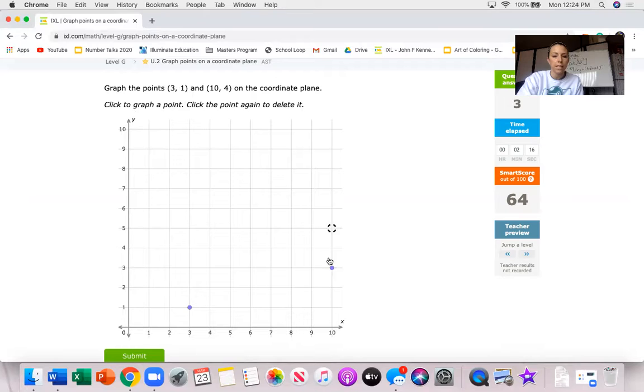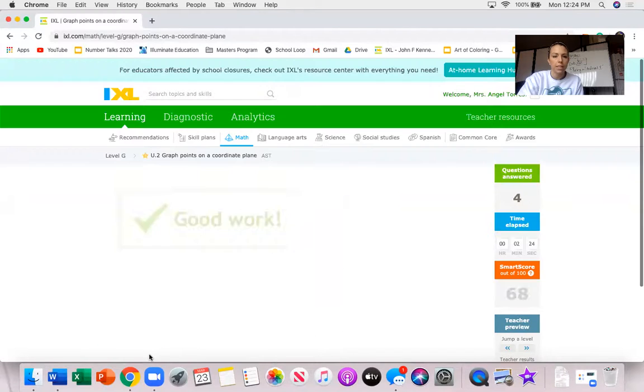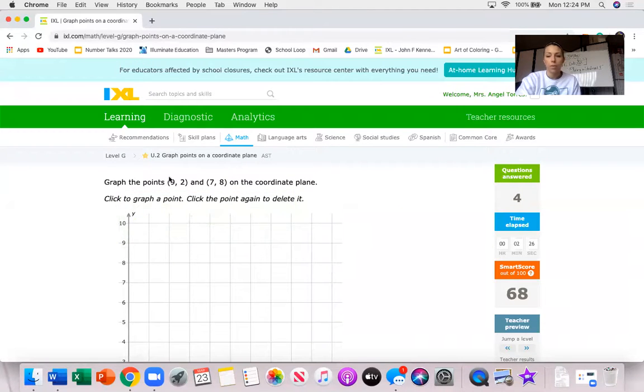So you notice it says click the point again to delete it. I can click to delete it move that up to 10-4. So let's see 3-1 and 10-4 click submit and it will give me another one.